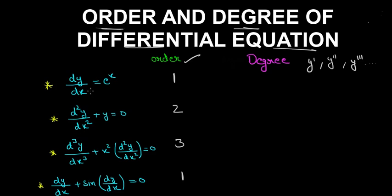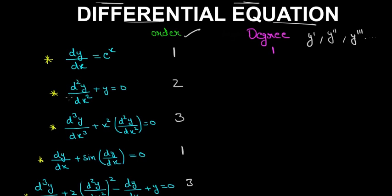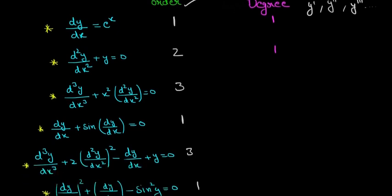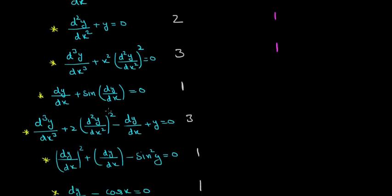Here the highest derivative is this one and its power is 1, so the degree is also 1. Here the highest derivative is this one and its degree is 1 because the power is 1. Now here, the highest derivative is this one — not this one — and this is an interesting case.